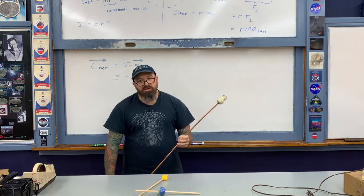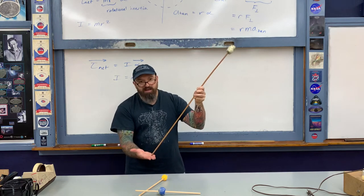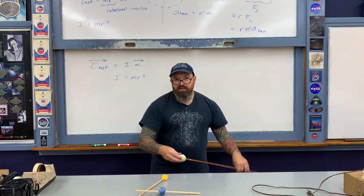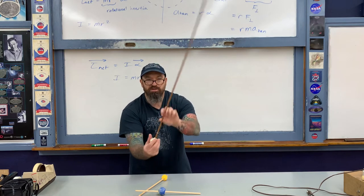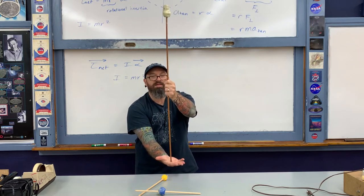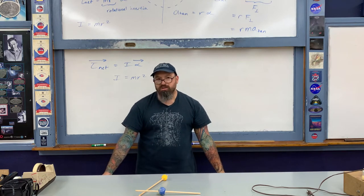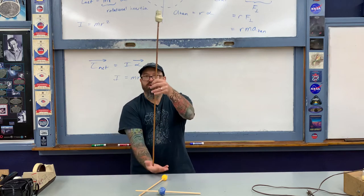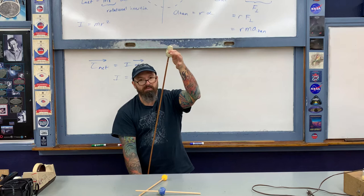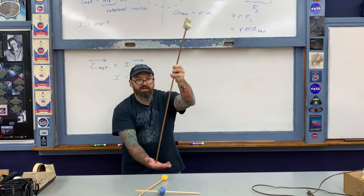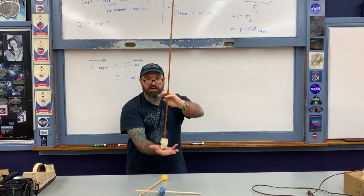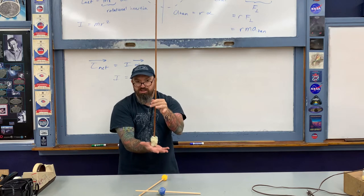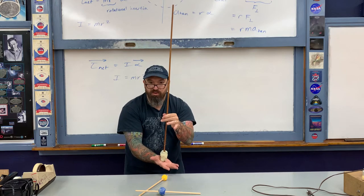The greater the distance of mass from the axis of rotation, the harder it is to change its angular velocity. Here's a demonstration using a stick with a large mass taped to the end. I'll balance the stick on my hand — my hand is the axis of rotation. The question is: is it harder to balance with all the mass close to the axis, or with most of the mass far from it? The greater rotational inertia is mr² — a bigger r means a bigger I, so the stick with mass far from the axis has much greater rotational inertia.